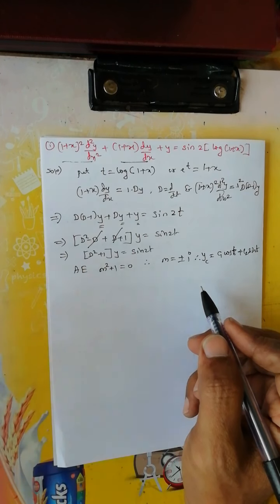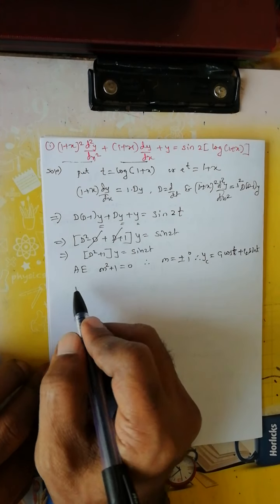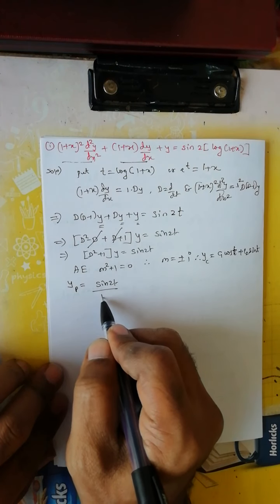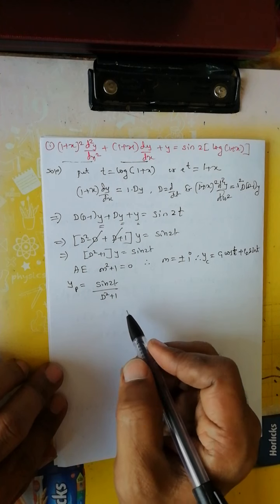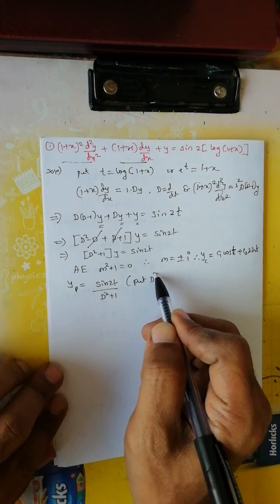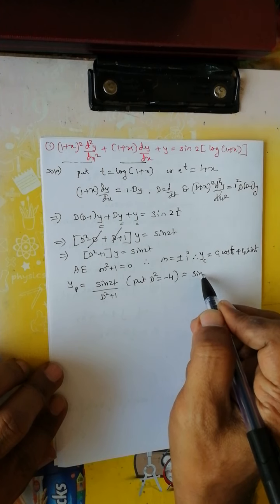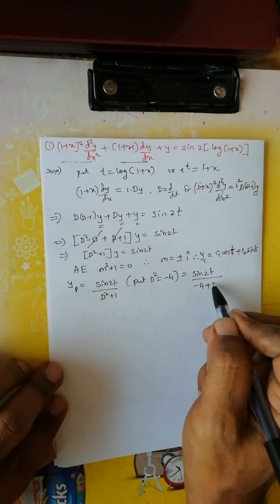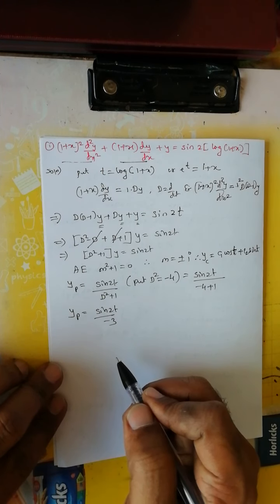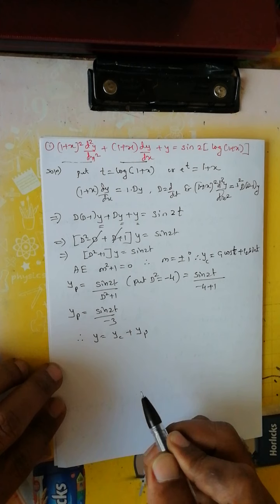Next we find the particular integral. y_p equals sin(2t) / f(D²) = sin(2t) / (D² + 1). This is particular integral type 2, so we replace D² with −(2²) = −4, giving sin(2t) / (−4 + 1) = sin(2t) / (−3). Therefore y_p = −sin(2t)/3. Therefore the general solution is y = y_c + y_p = c₁·cos(t) + c₂·sin(t) − sin(2t)/3.